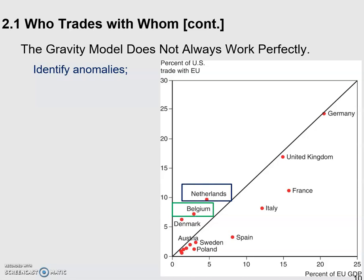For example, when we look at Netherlands and Belgium, given their economic size in the EU, we find they are actually trading more with the United States than the predicted values offered by the gravity model. For Belgium's size, the trend line shows how much they should trade with the US, but they actually trade like twice as much as the predicted value.